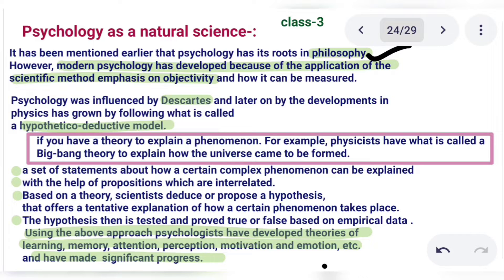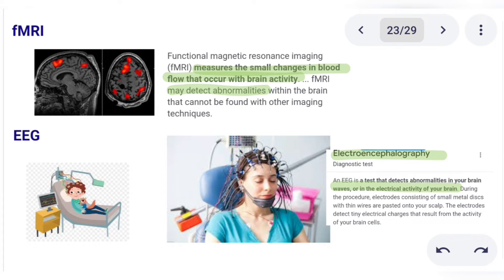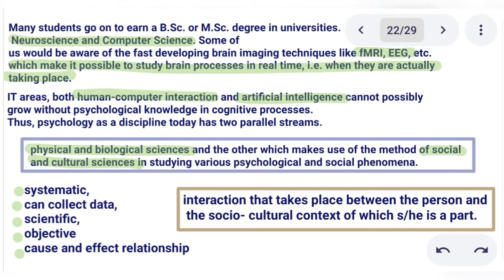Modern psychology is related to science — how it relates to science and how it relates to objectivity. It focuses on how to measure things. Psychology is related to biology, meaning biology students are closely connected to psychology, and those taking science subjects can study psychology as well.